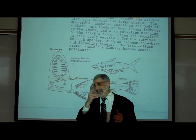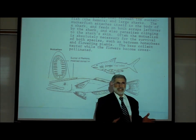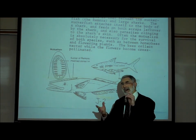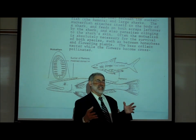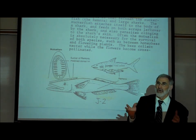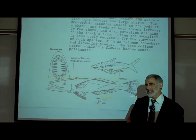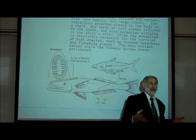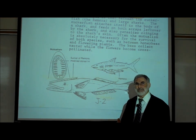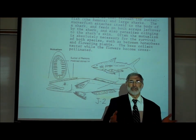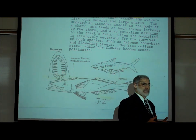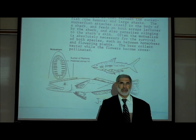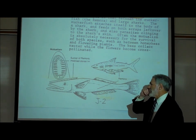Another example of a mutualistic symbiotic relationship is between flowering plants and honeybees. Honeybees pollinate flowering plants, which is the mechanism by which those plants reproduce. Without honeybees, flowering plants could not reproduce. What do the bees get? Free food in the form of nectar, from which they make honey. In the process of collecting nectar, the flowering plants get pollinated — that's how they reproduce.